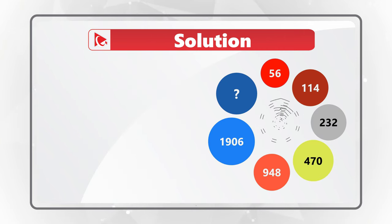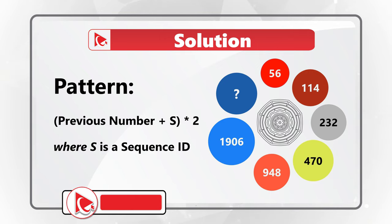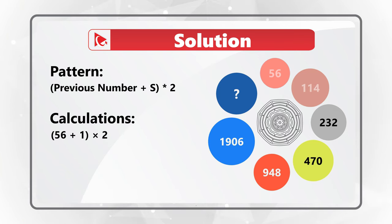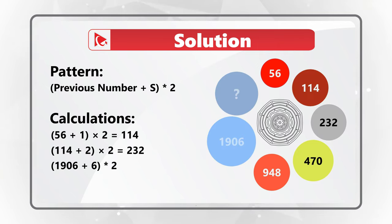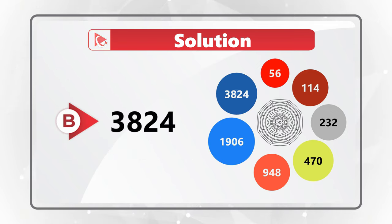For example: 56 plus 1 (the sequence number) equals 57, multiplied by 2 equals 114. Then 114 plus 2 equals 116, multiplied by 2 equals 232. Applying this to 1906: 1906 plus 6 equals 1912, multiplied by 2 equals 3824. So the correct answer is choice B, 3824.